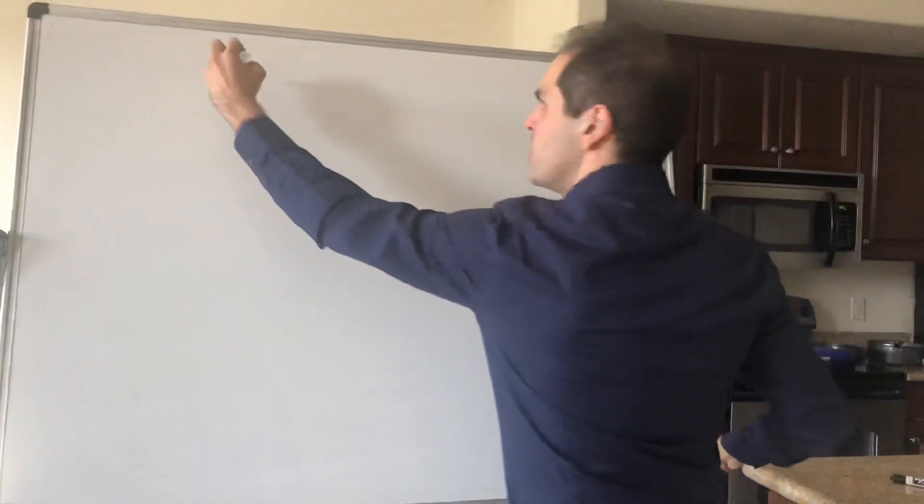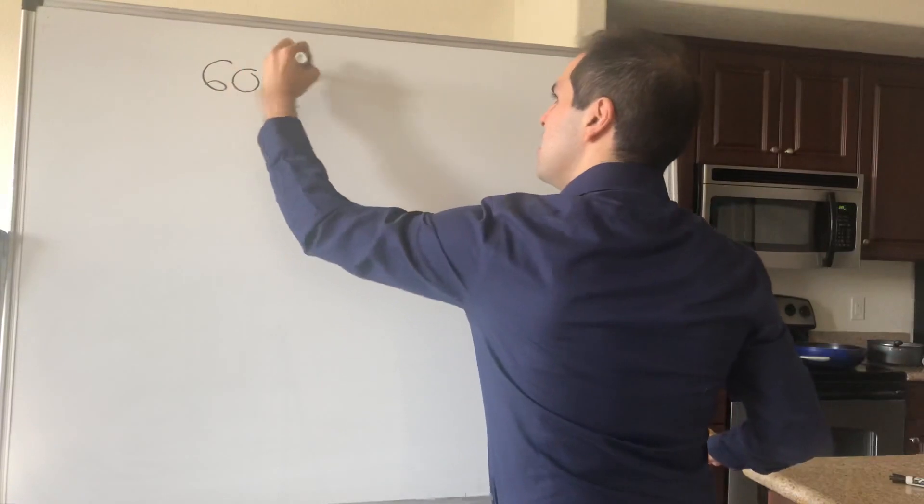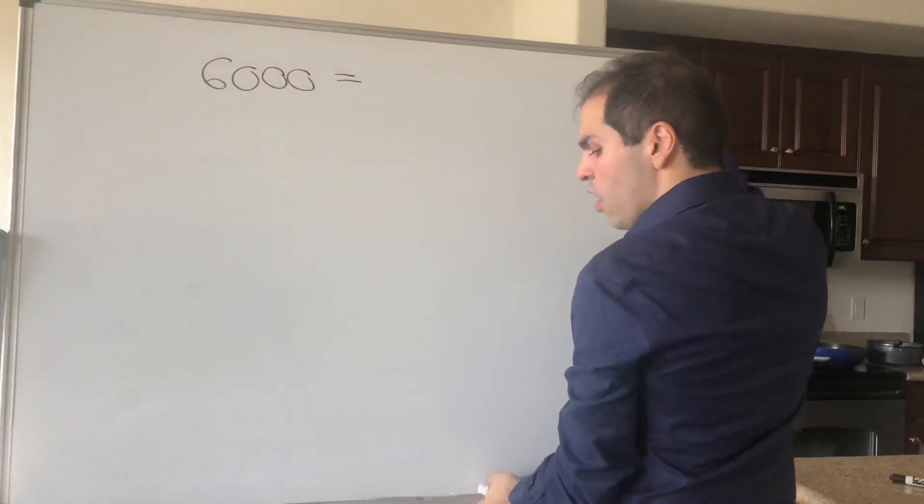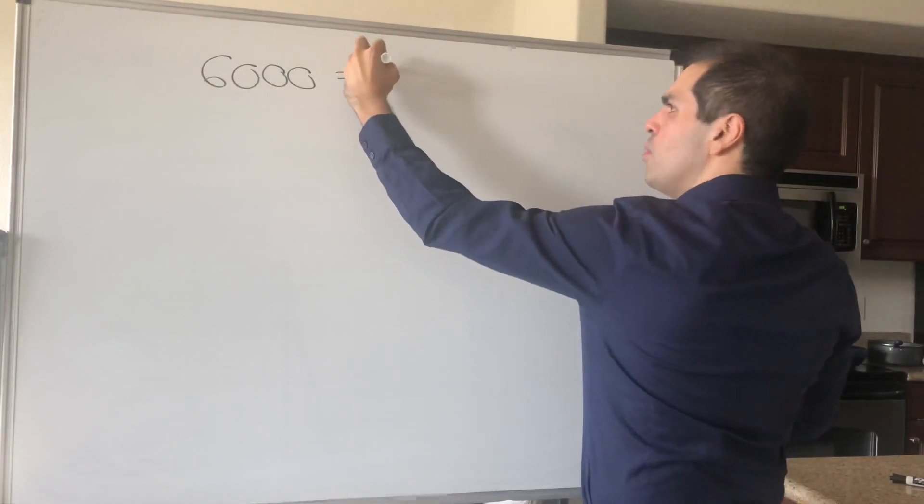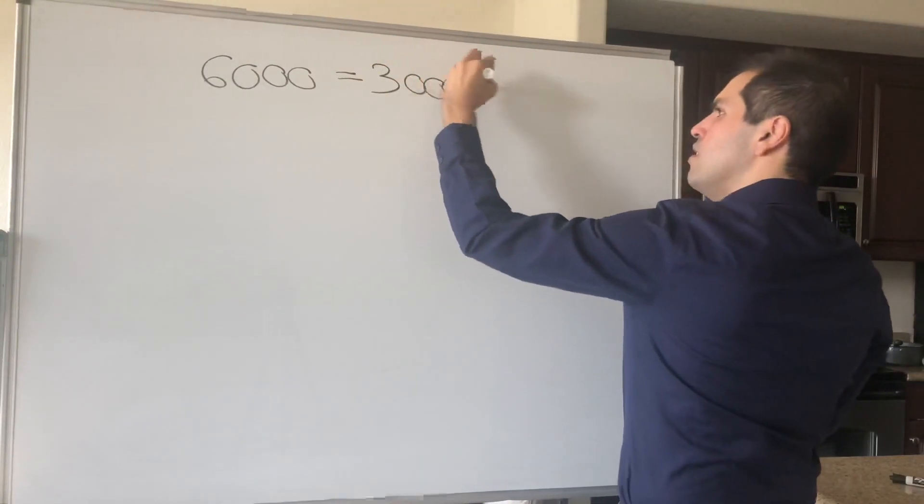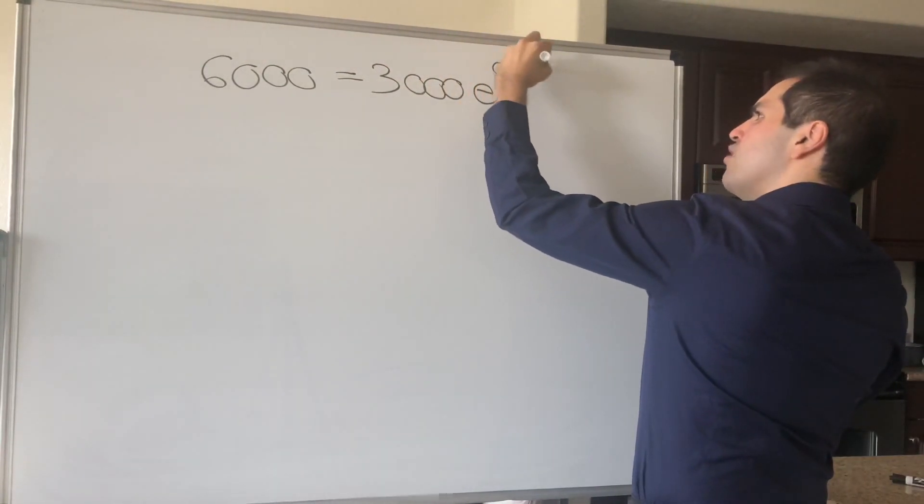Which means we have to solve the following equation: 6,000 equals PE to the RT, so equals 3,000 E to the 0.05T.